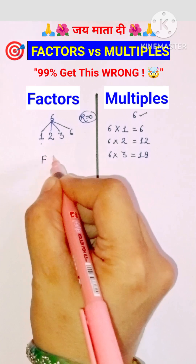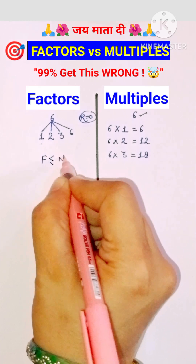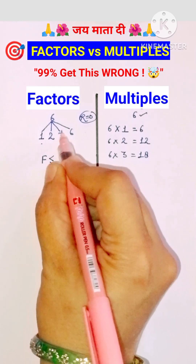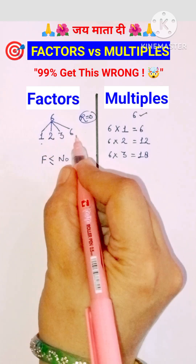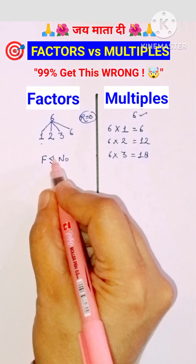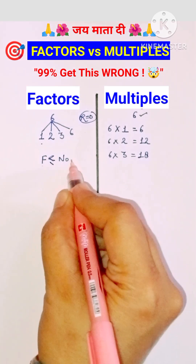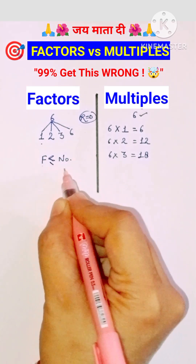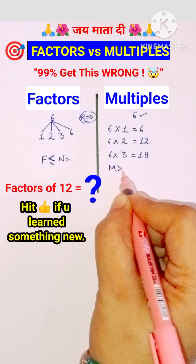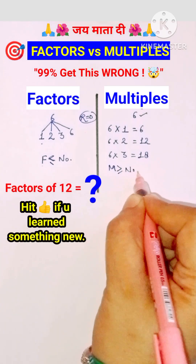Factors are always smaller or equal to the given number. All these factors are smaller than 6, and 6 is equal to 6, so factors are always smaller or equal to the given number. But multiples are always greater or equal to the given number.